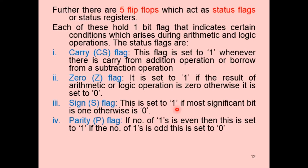For example, in a binary number with four 1s such as 1111, since 4 is even, the parity flag is set to 1. If the binary number has three 1s such as 1110, since 3 is odd, the parity flag is set to 0.